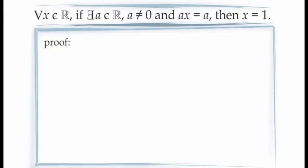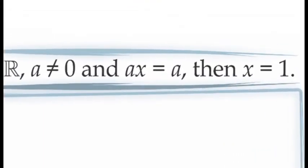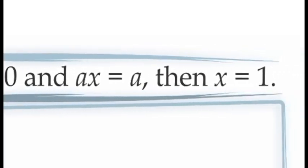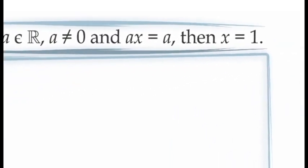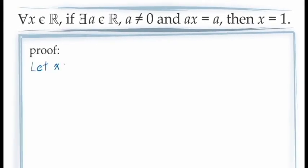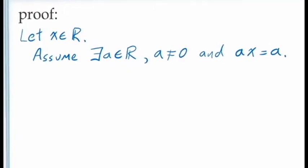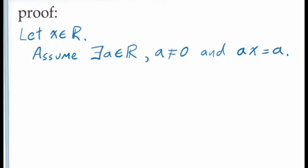Let's look at another example. In this example, we're going to prove: for all x in the real numbers, if there is at least one value of a in the real numbers for which a is not equal to 0 and a times x is equal to a, then x must be equal to 1. In other words, what we're showing is that if x behaves as a multiplicative identity for at least one non-zero real number a, then x must be the multiplicative identity, which is the number 1. To begin the proof, since we're proving this is true for all values of x, we start by letting x be an arbitrary real number. Since we're proving a conditional statement using a direct proof, we assume the full antecedent: there is at least one real number a for which a is not equal to 0 and a times x is equal to a. Since this assumption contains an existential quantifier, we'll need to use the principle of existential instantiation.